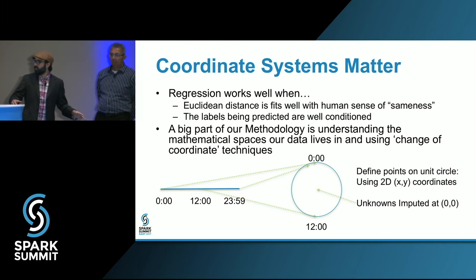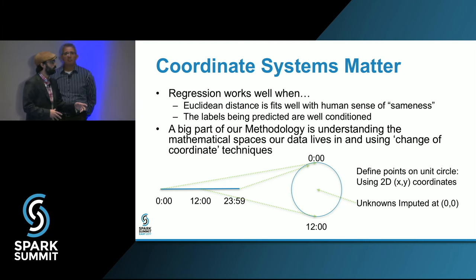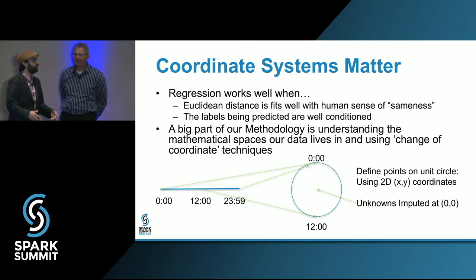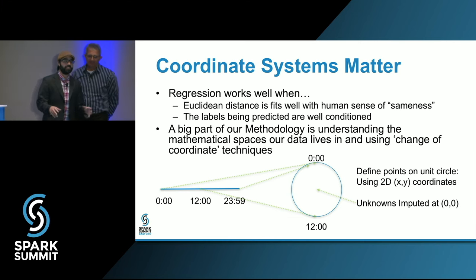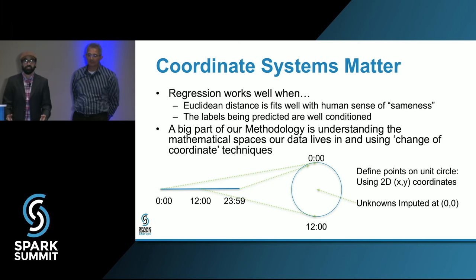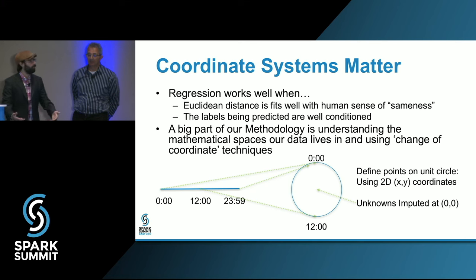I want to take a sidebar on coordinate systems, because my discussion of PCA really focuses on them. Machine learning has a fundamental assumption that things are similar if they're close in Euclidean distance. Sometimes the natural representation of data doesn't have that property, and we can do both feature and label engineering to cause our problem statement to have this property. My favorite example is time — 11:59 and midnight are actually very close to each other.